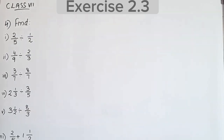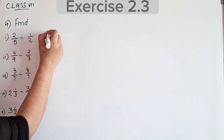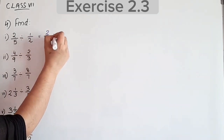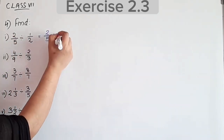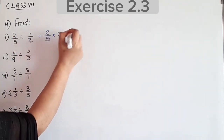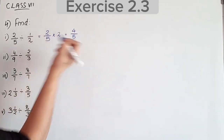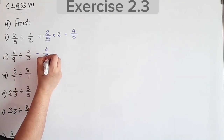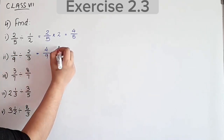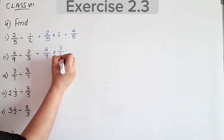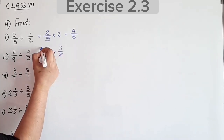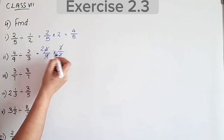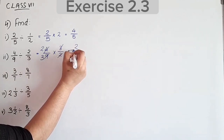Fourth question: 2/5 divided by 1/2. Division becomes multiplication: 2/5 into reciprocal of 1/2, which is 2. So 2/5 into 2/1 equals 4/5. Then 2/3 divided by 3/2 gives 2 by 4 and 3 by 3, result is 3 by 3.